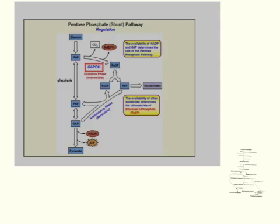What we have here is the formation of glucose 6-phosphate, and then there's an enzyme, glucose 6-phosphate dehydrogenase, which can convert the glucose 6-phosphate into ribulose 5-phosphate. It can either be converted back into a downstream glycolysis substrate, or it can be shunted all the way over to a nucleotide. The reaction with glucose 6-phosphate dehydrogenase is an irreversible reaction, so you can't go back to glucose 6-phosphate from the ribulose 5-phosphate.